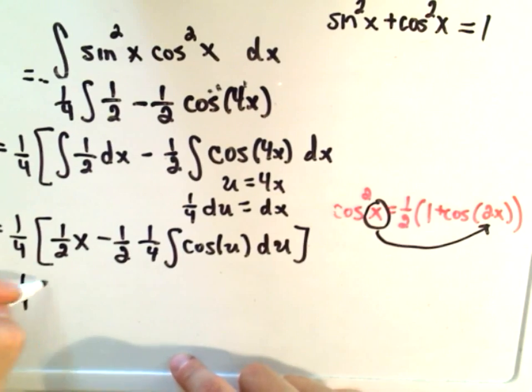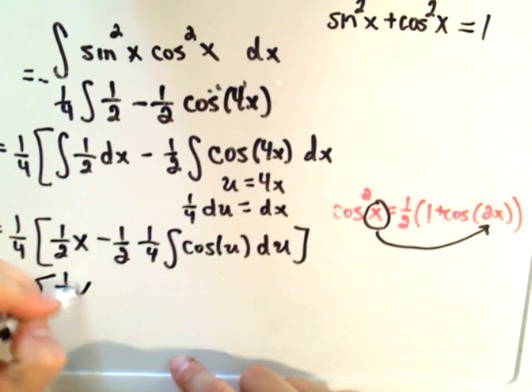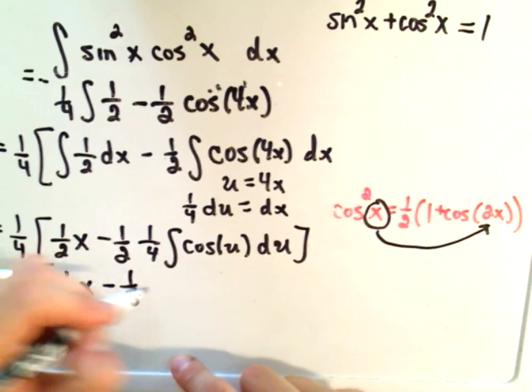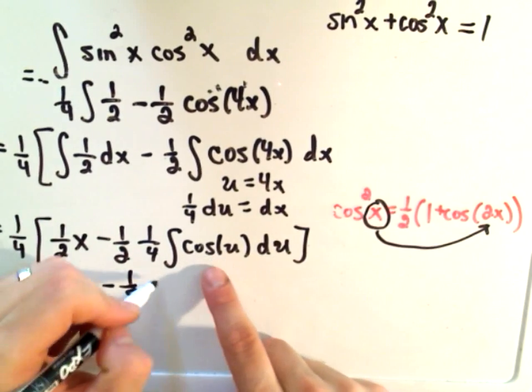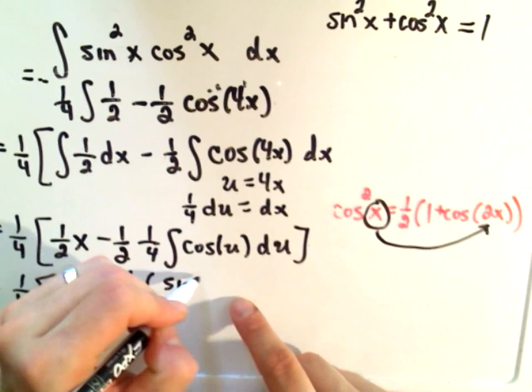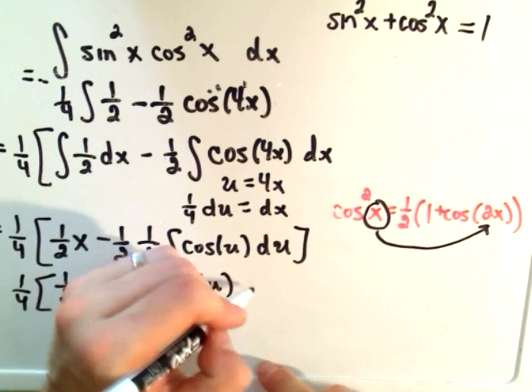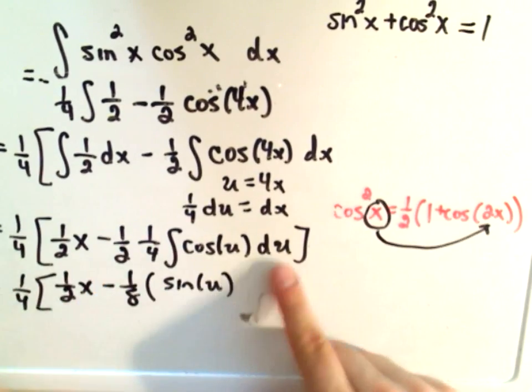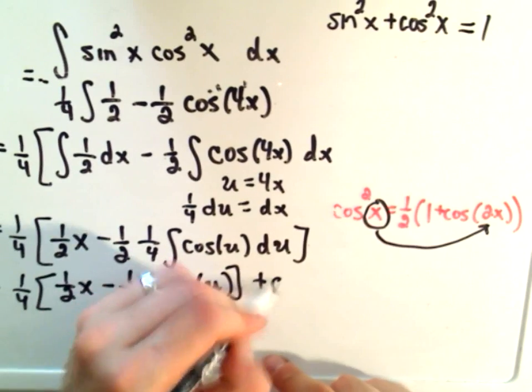This is one-fourth out front, one-half x minus an eighth. Integrating cosine of u gives sine of u, plus c.